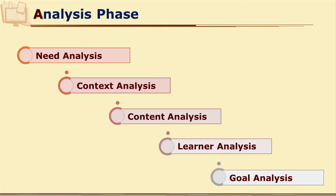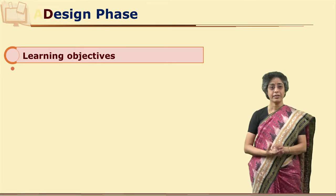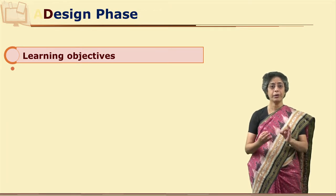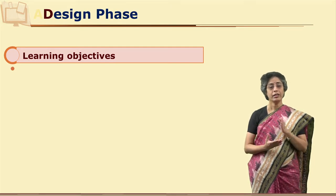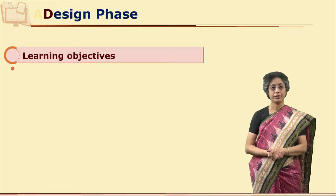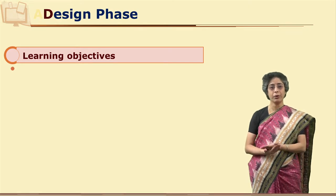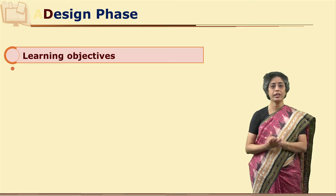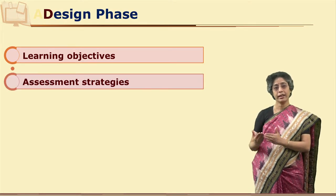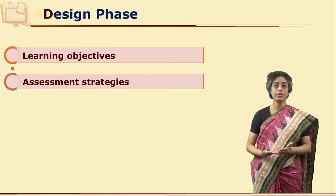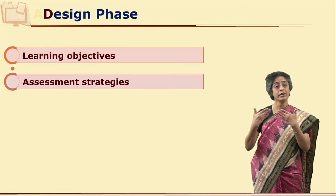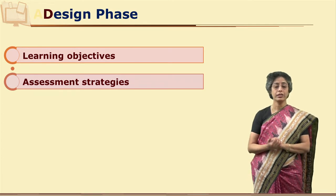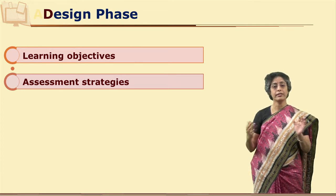What do we design first? Specific performance objectives need to be designed before developing any material, because the entire structure and treatment of the material will depend on these performance outcomes. When we develop and design such outcomes, we also need to think about assessment of these outcomes — whether these outcomes are being achieved or not. We need to make provision for this particular assessment strategy.